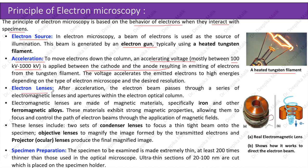Electron lenses: after acceleration, the electron beam passes through a series of electromagnetic lenses and apertures within the electron optical column. Electromagnetic lenses are made of magnetic materials, specifically iron and other ferromagnetic alloys. These materials exhibit strong magnetic properties, allowing them to focus and control the path of electron beams through the application of magnetic fields.